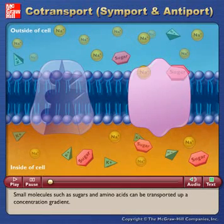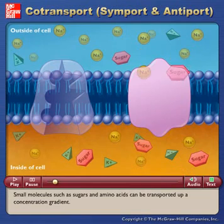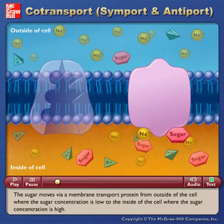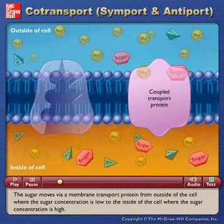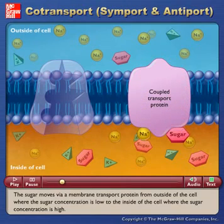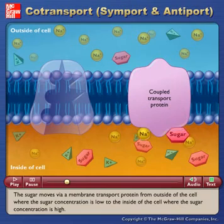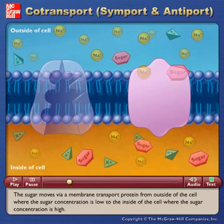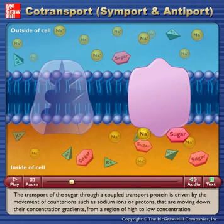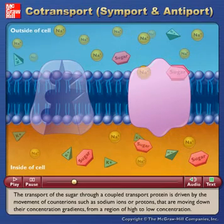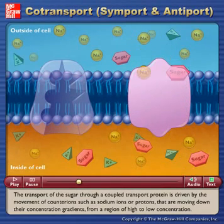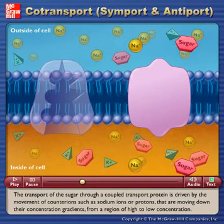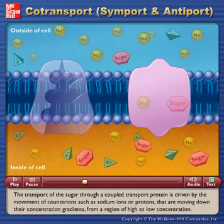Small molecules such as sugars and amino acids can be transported up a concentration gradient. The sugar moves via a membrane transport protein from outside of the cell, where the sugar concentration is low, to the inside of the cell where the sugar concentration is high. The transport of the sugar through a coupled transport protein is driven by the movement of counter ions such as sodium ions or protons that are moving down their concentration gradients from a region of high to low concentration.